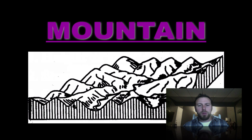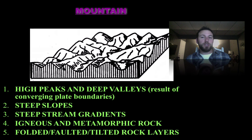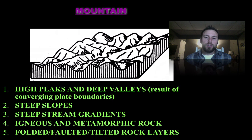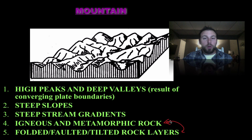The first type of landscape region is mountains. Mountains have a few distinct features: high peaks and deep valleys, steep slopes, and because of those steep slopes they have a very steep stream gradient with fast-moving water. We also see igneous and metamorphic rock, and folded, faulted, or tilted rock layers. That buildup of pressure due to plate tectonics causes folding, faulting, and tilting, which is closely associated with metamorphic rocks.